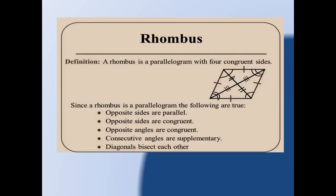Since a rhombus is a parallelogram, the following are also true: opposite sides are parallel, opposite sides are congruent (that is, equal), opposite angles are congruent, consecutive angles are supplementary, and diagonals bisect each other.